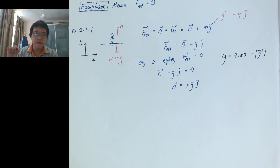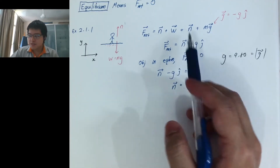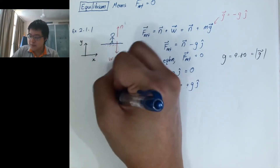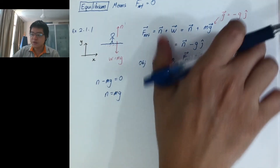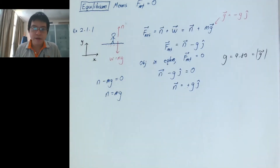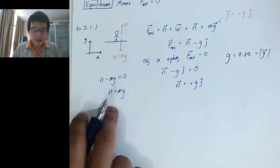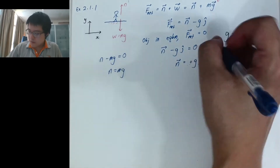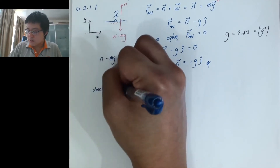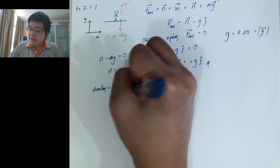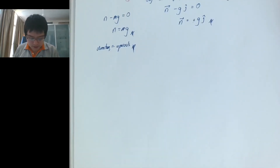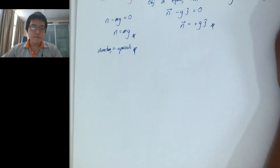So the normal force vector is N = mg in the upward j direction. Most of the time it is convenient to just write the magnitude, which is fine. The key point is to remember to also state the direction: upwards. That is the correct complete answer — magnitude mg and direction upward.